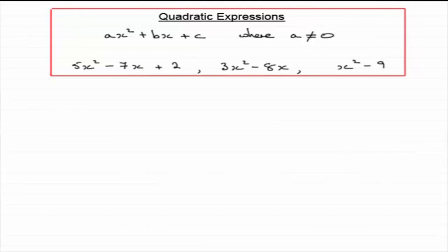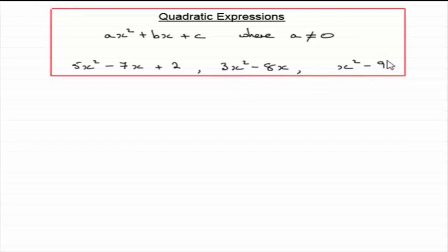In the previous tutorial, we started to look at factorising quadratic expressions. When we factorise any expression, I've always been trying to encourage you to always look for common factors. In this kind of quadratic expression, we have a common factor x. But what about this one here, x squared minus 9? It has no common factor.